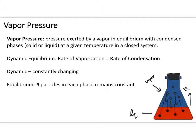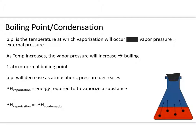Boiling point is the temperature at which vaporization occurs when you are heating a substance. Boiling occurs when vapor pressure equals the external atmospheric pressure. As temperature increases, more particles are released above the liquid, increasing vapor pressure, until it equals external pressure — at that point, boiling happens.